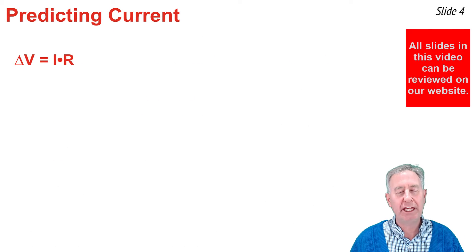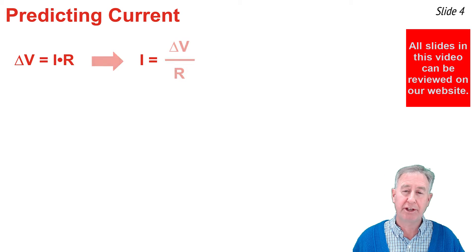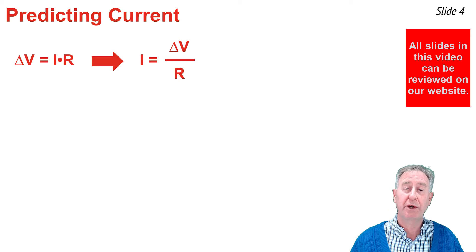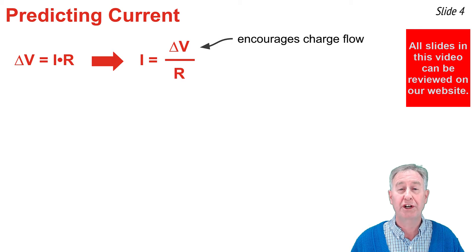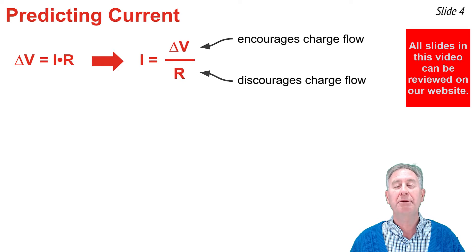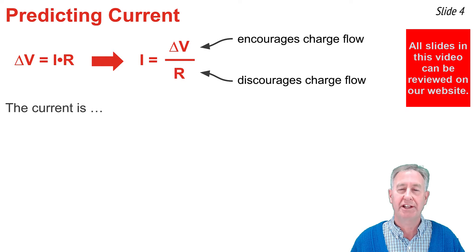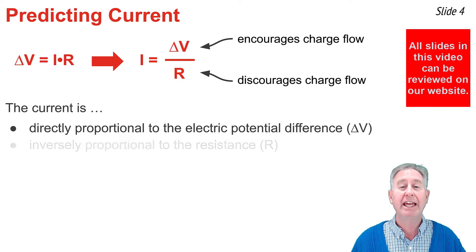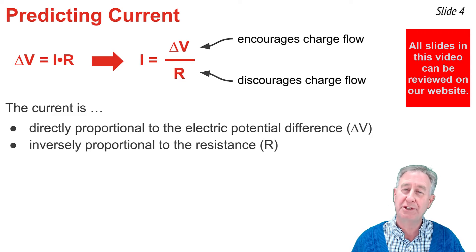The equation delta V equals IR is most commonly written as I equals delta V divided by R. When written this way, it shows the two variables that affect the current. The delta V encourages charge flow, and the R discourages charge flow. Another way to put it is to say that the current is directly proportional to the electric potential difference, delta V, and inversely proportional to the resistance.